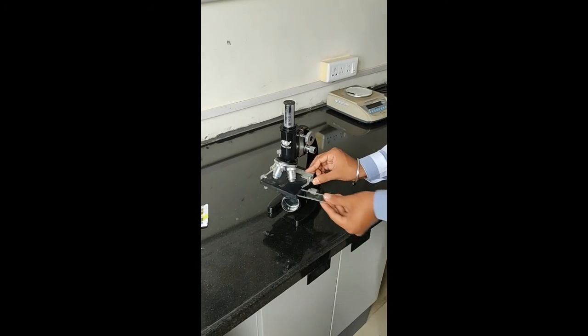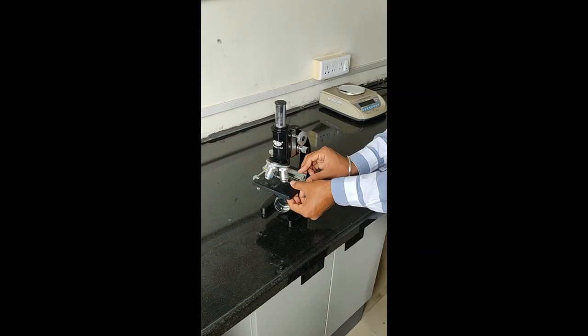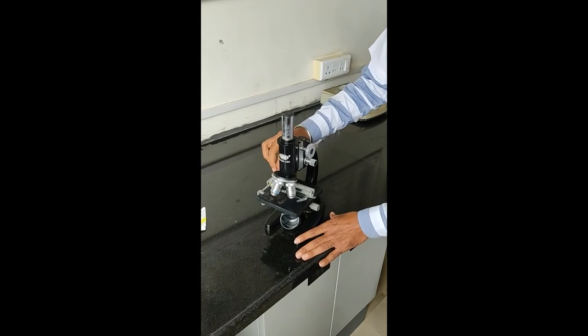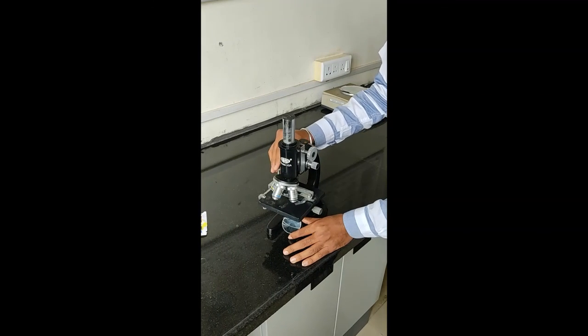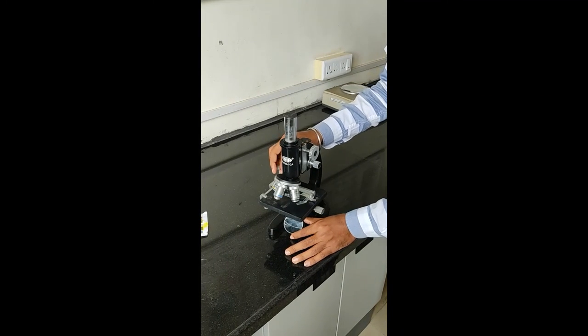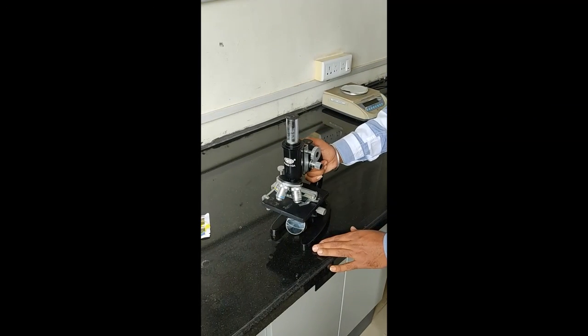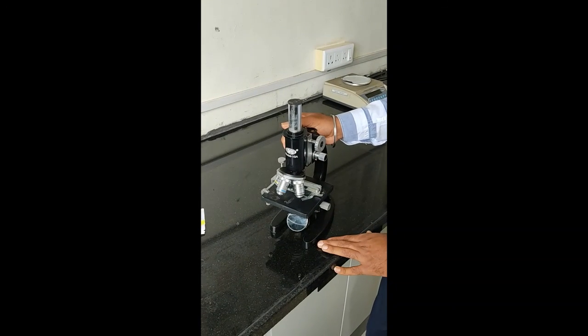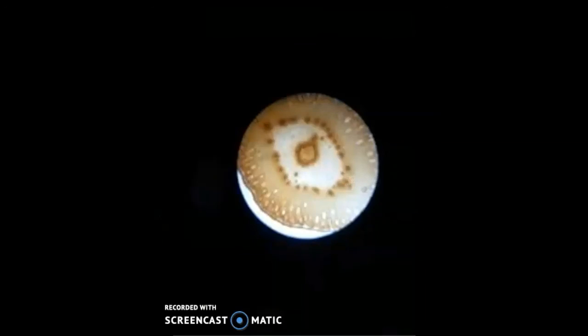Now put the slide on the stage of the microscope and adjust the alignment of the TS under the objectives of the microscope. Now you can observe the transverse section of the crude drug. The given crude drug is found to be clove bud.